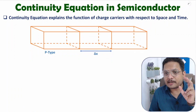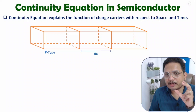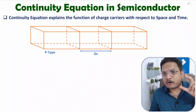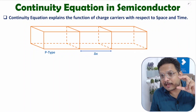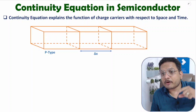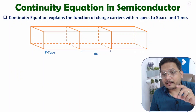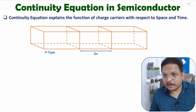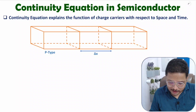First you need to understand what the continuity equation is. The continuity equation explains the function of charge carriers with respect to space and time — specifically how the concentration of charge carriers changes with respect to space and time. I'll derive it step by step, and for that I'll be considering p-type material. Later I'll tell you how we can have an equation based on n-type material as well.